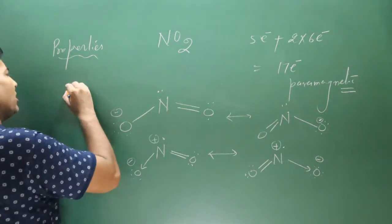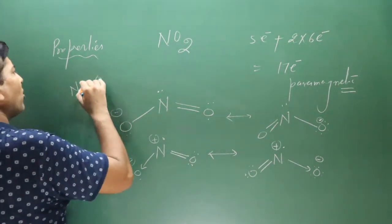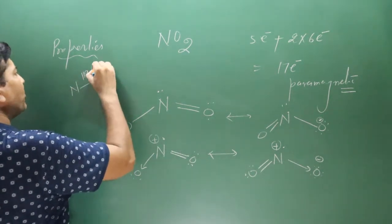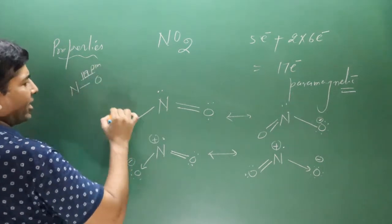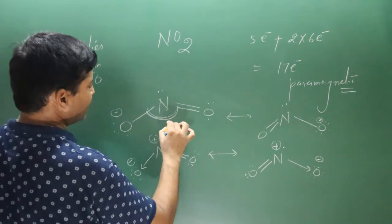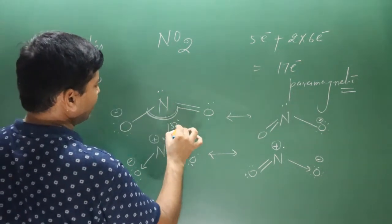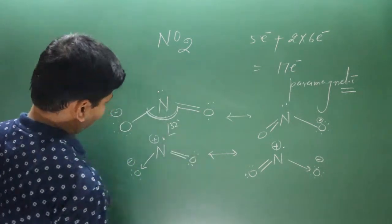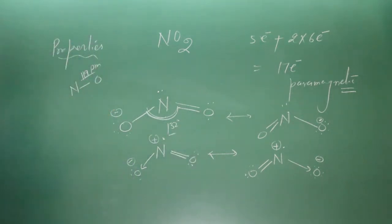The nitrogen–oxygen bond length is 119 picometers, and the bond angle is 132 degrees. Remember this data.